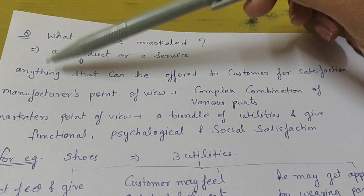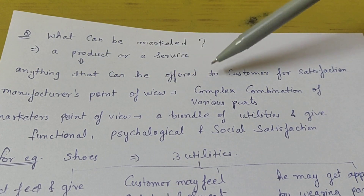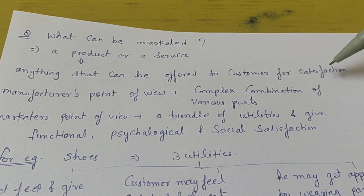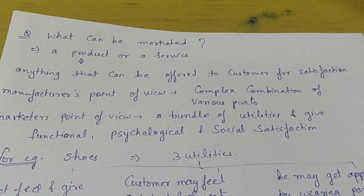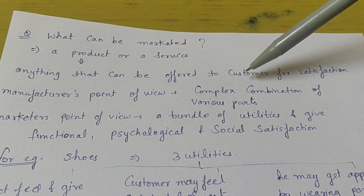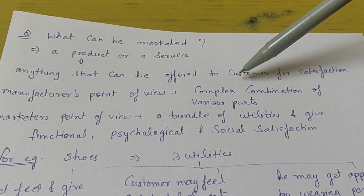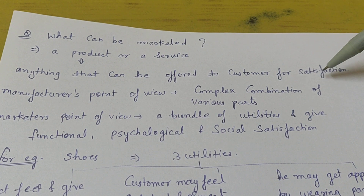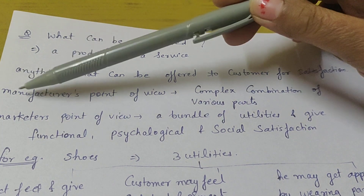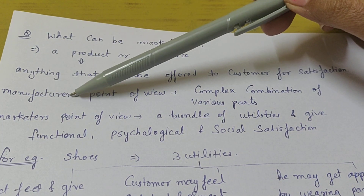So what does product mean? Anything that can be offered to customers for satisfaction — anything. Sofa, food, laptop, computer — anything that can be offered to customers for satisfaction is a product.